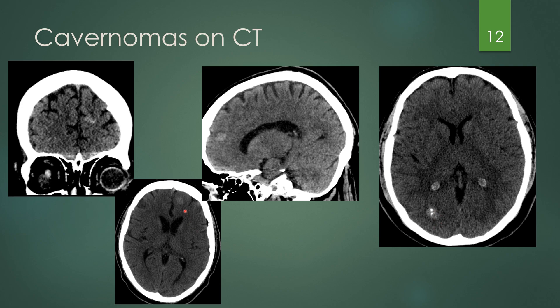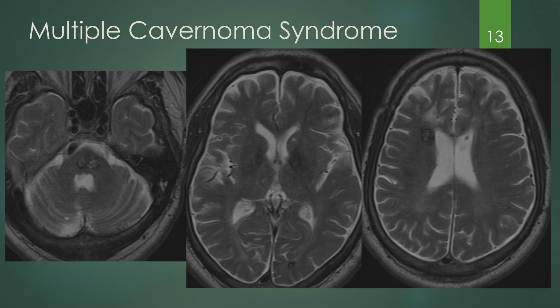Here's that same cavernoma in the left frontal lobe. You can get a multiple cavernoma syndrome, meaning multiple cavernomas in the same patient. This patient has one in the pons, one in the occipital lobe, and one in the frontal lobe — that is multiple cavernoma syndrome. So when you see one, look for two.